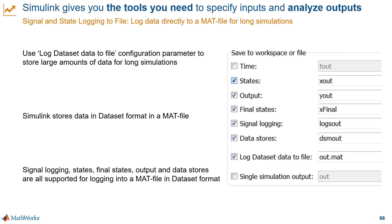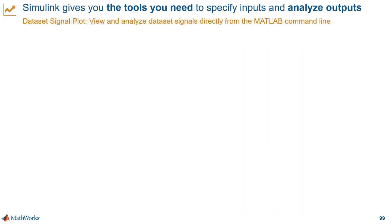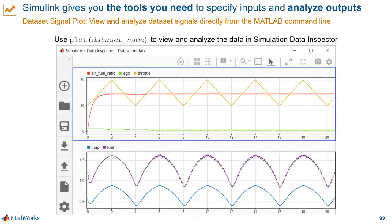On the output side, you may be working with simulations that produce large amounts of data. If you need to capture that data in a file, it's really easy — simply check the option to log data set to file under the configuration parameters, and check the options for what you want to log: states, outputs, signal values, and so on. All of that is logged in a dataset format contained in a MAT file. When you have the dataset object, all you have to do is use the plot command in MATLAB, and you can visualize and analyze the data in more detail with the Simulation Data Inspector. This keeps the workflow really simple even if you're not very familiar with dataset objects.